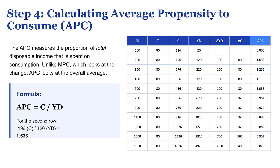Let's check the next one: the change in consumption was 160 divided by a change in income of 200 — that's also 0.8. You see the pattern here? No matter which rows we look at, it keeps coming out the same. And there it is: 0.8. This is the number we've been building towards this whole time. It seems simple, but it tells us a really powerful and consistent story about how this economy behaves when it gets a little more cash.